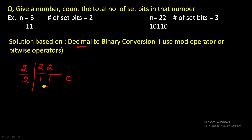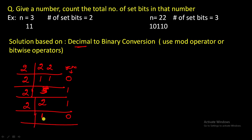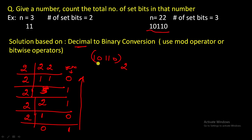Continuing: divide 2 by 2, quotient is 1, remainder is 0. Then divide 1 by 2, quotient is 0, remainder is 1. Now the number has reduced to 0, so we stop. Reading the remainders in reverse gives us 1 0 1 1 0, which is the binary form of 22.